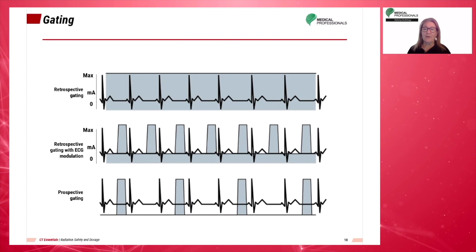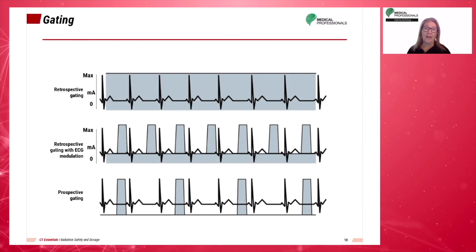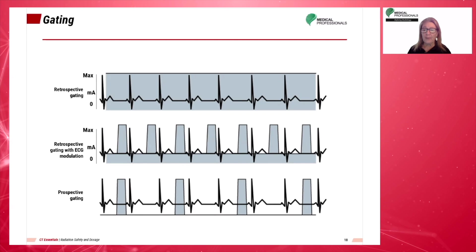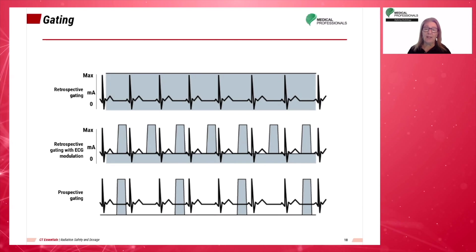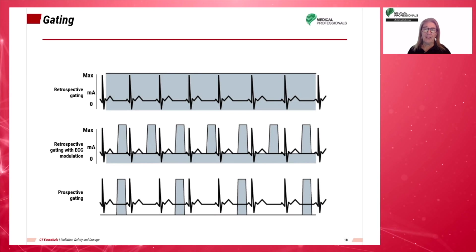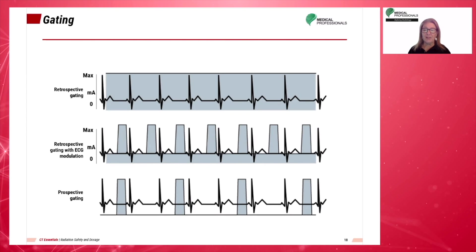In addition to imaging with high temporal resolution, we must image at the correct time, in synchrony with the cardiac cycle. There are two methods: prospective and retrospective ECG gating. Prospective ECG triggering only acquires images during cardiac diastole — the scanner simply waits in between. Retrospective gating acquires images continually throughout the cardiac cycle and pieces together images from the desired phase, typically diastole for anatomic imaging, after the entire exam is completed. There are advantages and disadvantages to each.